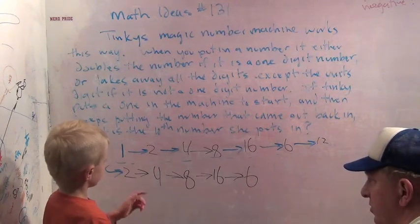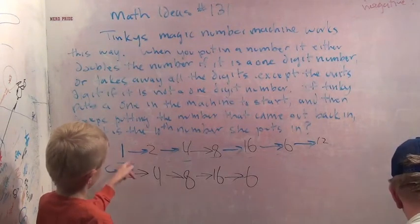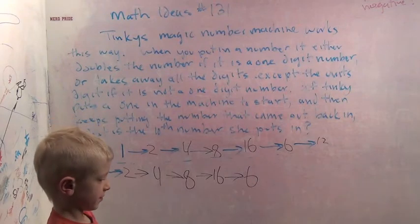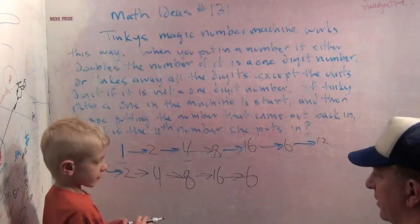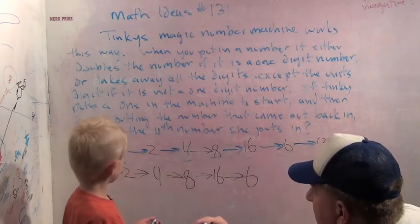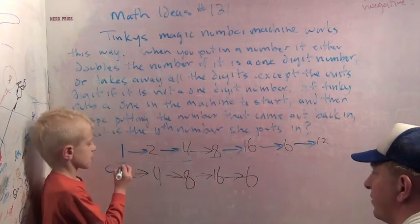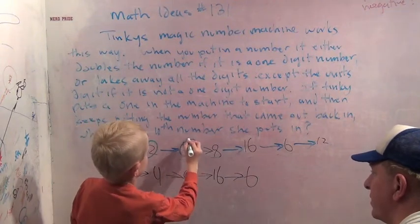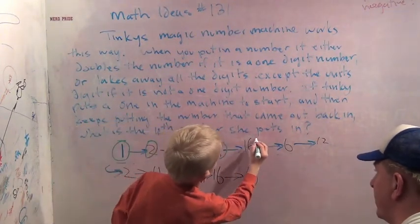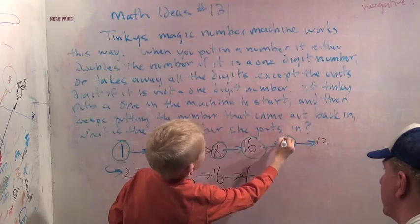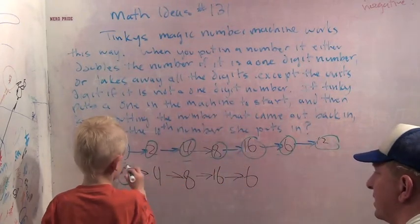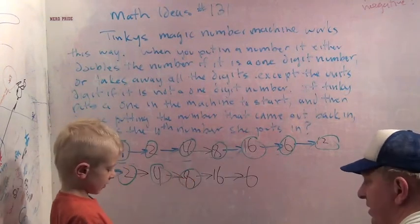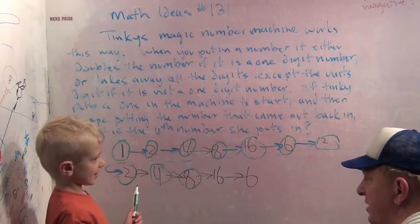Where's the first number she put into the machine? Why don't we use a different color here? Circle it in with green. And stand off to the side. So where's number one? And then number two, three, four, five, six, seven, eight, nine, and number ten. So that would be eight. So what's the tenth number she put into the machine is? Eight.